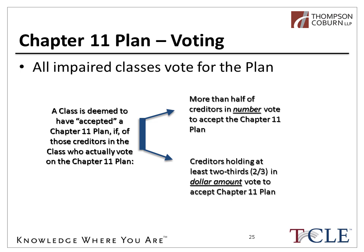Impaired classes vote on the plan. A class is deemed to accept the plan if at least half the number of respondents casting ballots vote to accept, and at least two-thirds in dollar amount also accept. Even if a particular class votes against the plan, the plan can still be confirmed over that class's vote — this is called a cramdown.